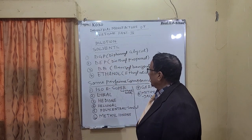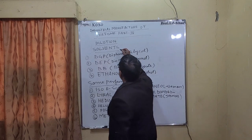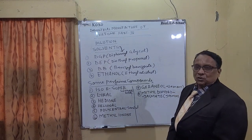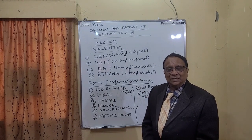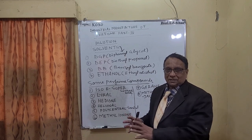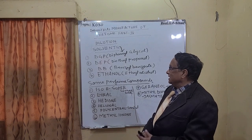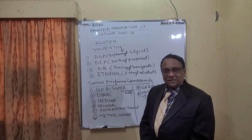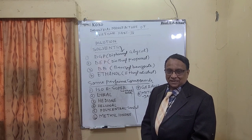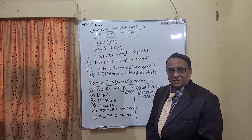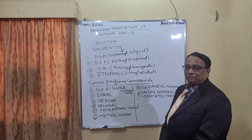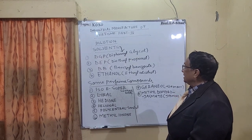Let me show you the solvents. Perfumes are actually solutions - a combination of solvent and solute. The solvent may be ethyl alcohol, DGP, DEP, or BB. The first solvent is DGP, called dipropylene glycol, and the second one is DEP, diethyl phthalate, which is a type of alcohol.